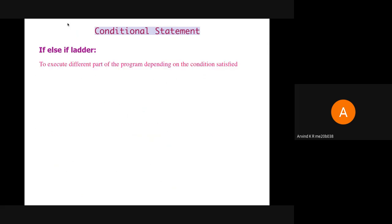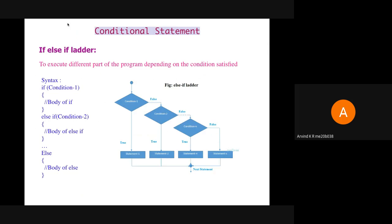Next is an if-else ladder. Whenever we want to execute different pieces of code for different cases, we use this if-else ladder. The syntax is similar to if-else, but we add several else-if blocks with corresponding conditions in between. We can add any number of else-if conditions. As shown in the flowchart, first condition one is checked. If it's false, condition two is checked, then condition three, and so on. If all conditions fail, the else part gets executed. If any one condition becomes true, the corresponding code gets executed and everything after that is skipped.